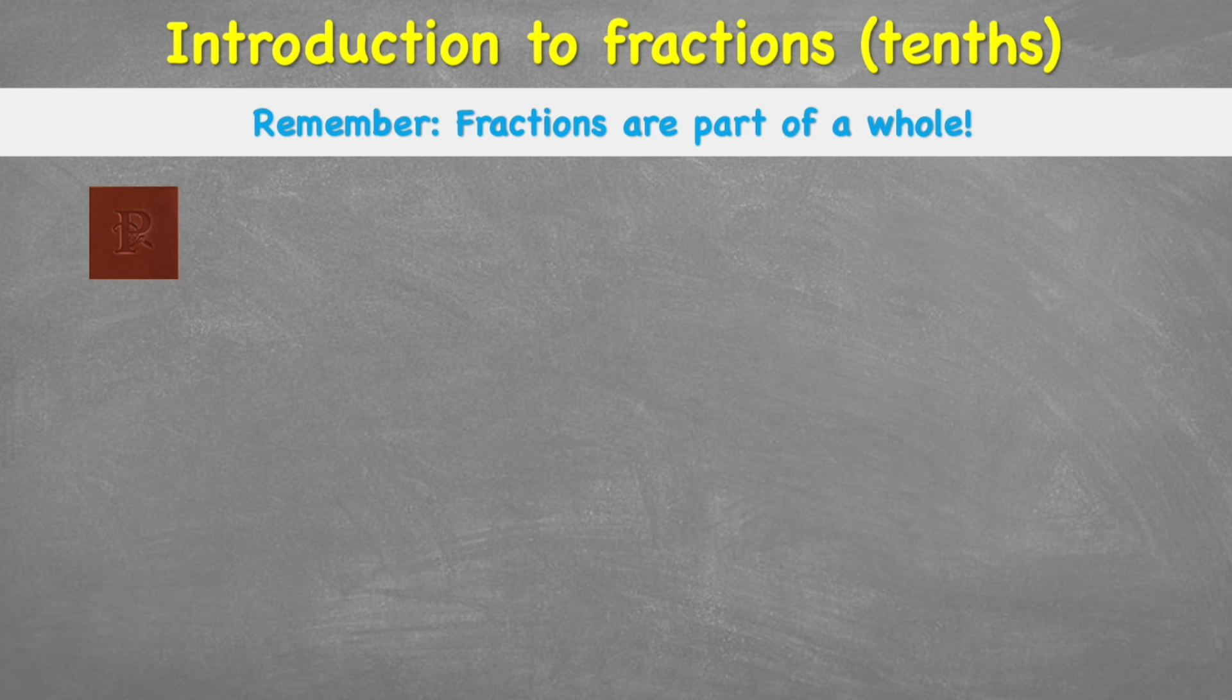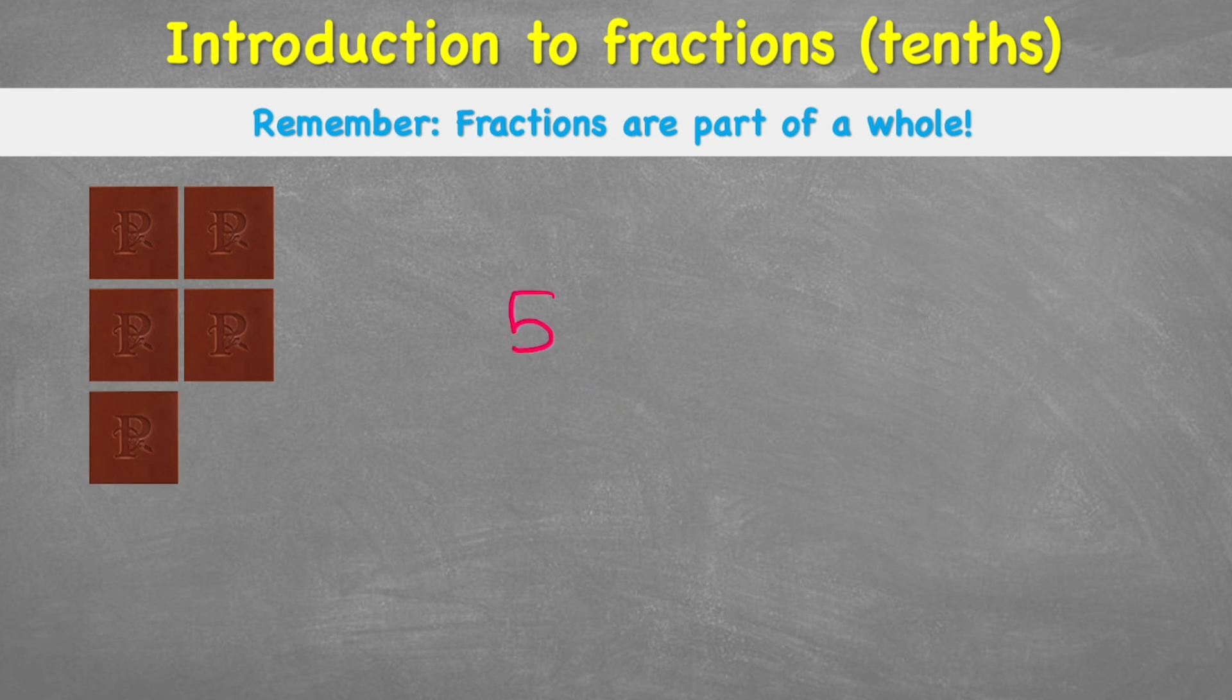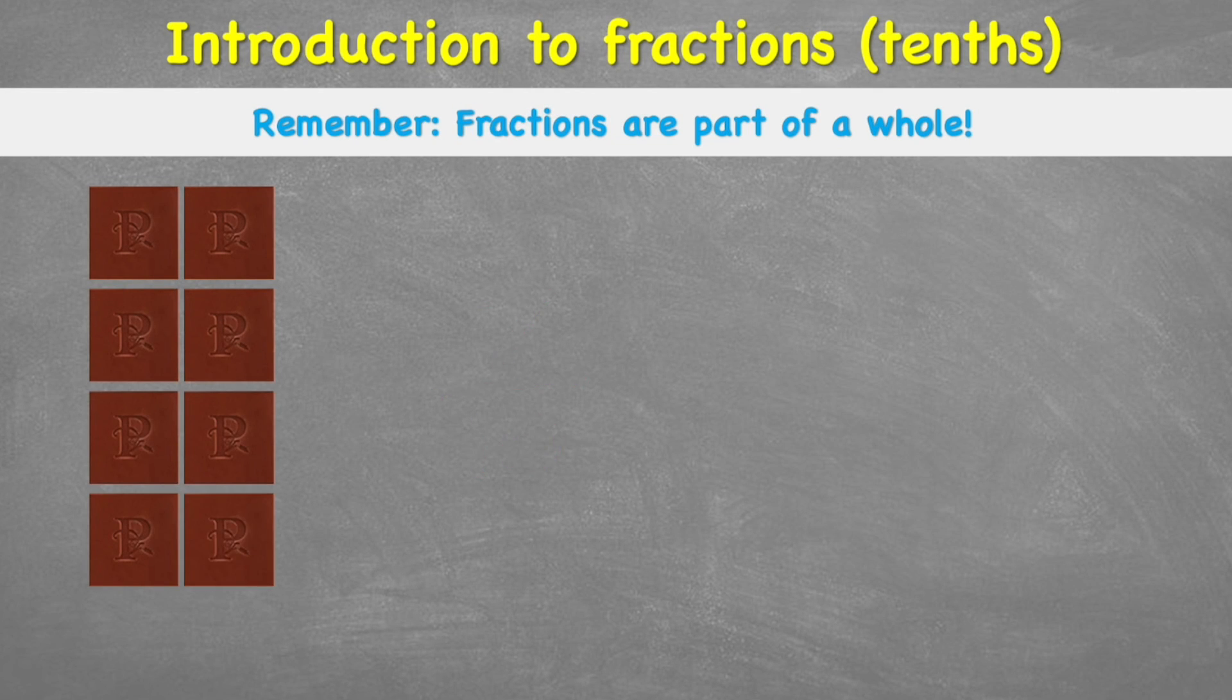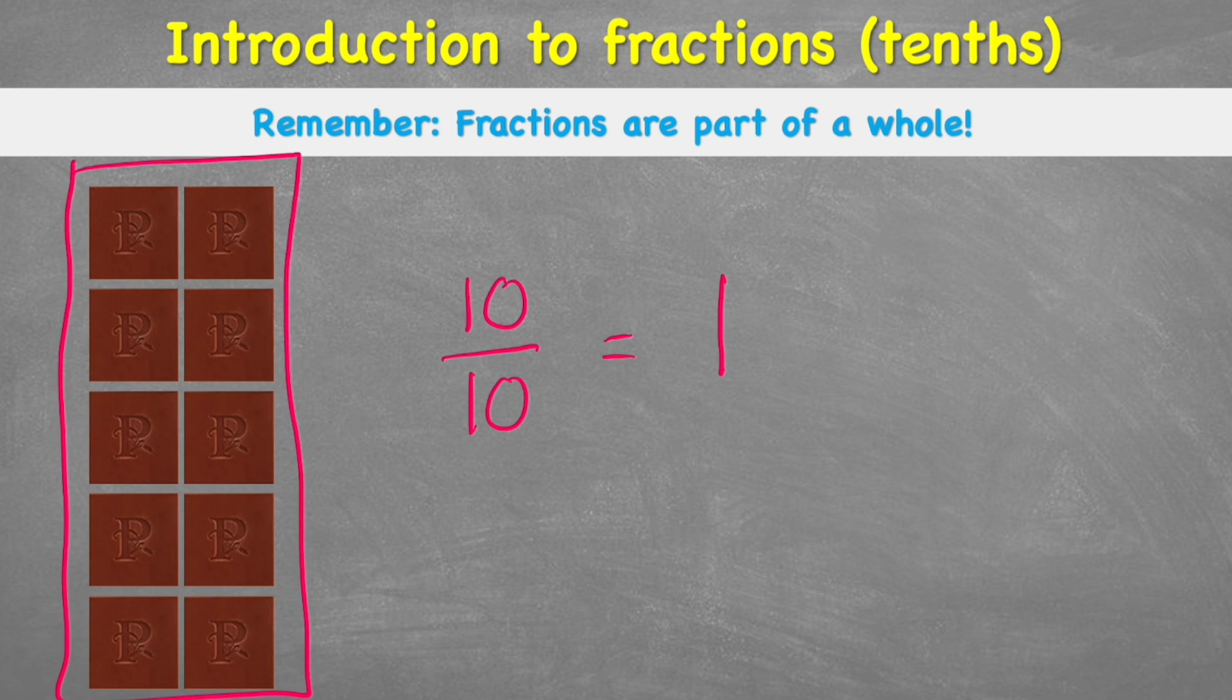So if we were to look at the individual parts, here we can see I have one tenth of my original chocolate bar. Now I have two tenths. Then three tenths. Then four tenths. Then five tenths. We can see we're counting up in tenths. Six tenths. Seven tenths. Eight tenths. Nine tenths. And then finally, ten tenths. Or in other words, one. Because ten tenths makes back up our original one chocolate bar. So ten tenths is equivalent or the same as saying one.